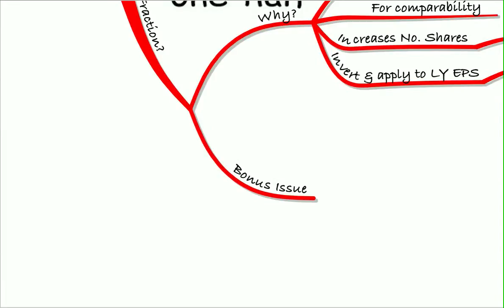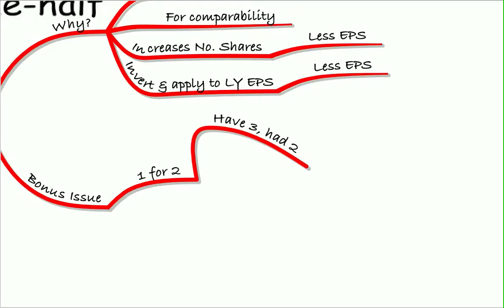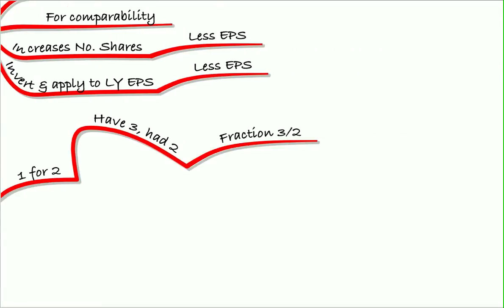So for a bonus issue, for a one-for-two issue, remember we have three. One plus two is three. We had two originally, so the fraction for our table would be three over two. So we put have over had, and it will always be big over small because we're grossing it up.